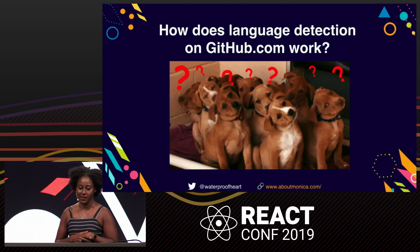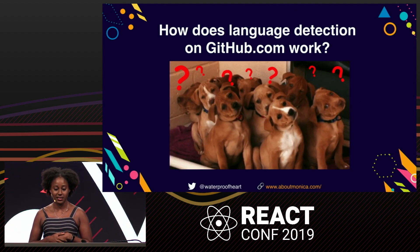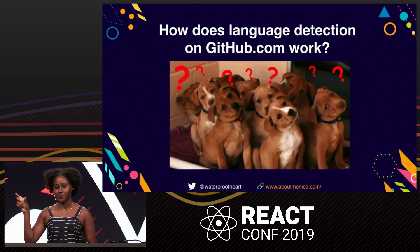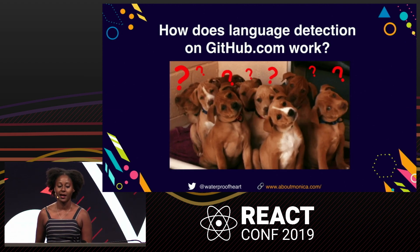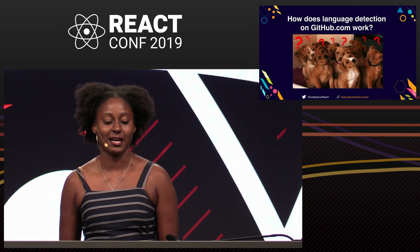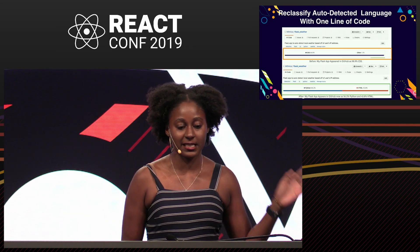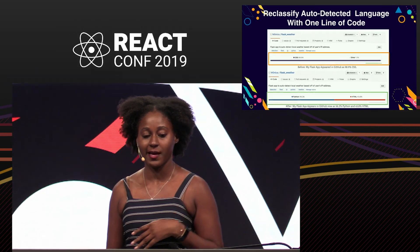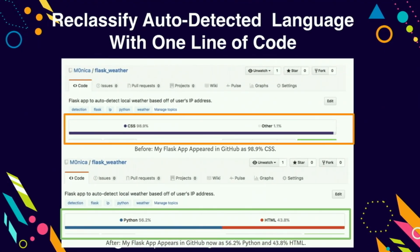Another mystery I was trying to figure out about GitHub was how it detects the languages of repositories. If you've ever been to a GitHub repo, there's a colorful bar that shows you the language breakdown. I had a lot of questions about whether this was even accurate. This is a picture of one repo shown with drastically different classifications — I changed one line of code and the graph changed from being majority classified as CSS to being half Python and half HTML.